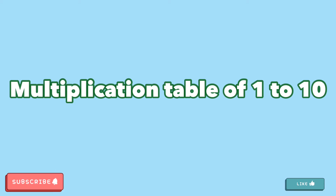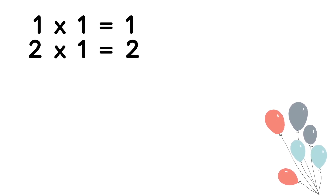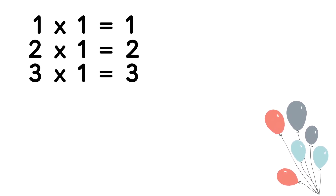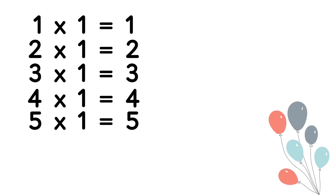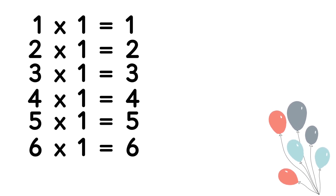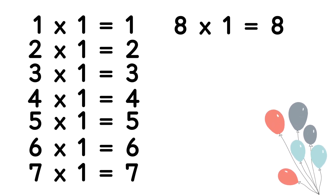So without further ado, let's get started! Table of 1: 1 one is 1, 2 ones are 2, 3 ones are 3, 4 ones are 4, 5 ones are 5, 6 ones are 6, 7 ones are 7, 8 ones are 8.